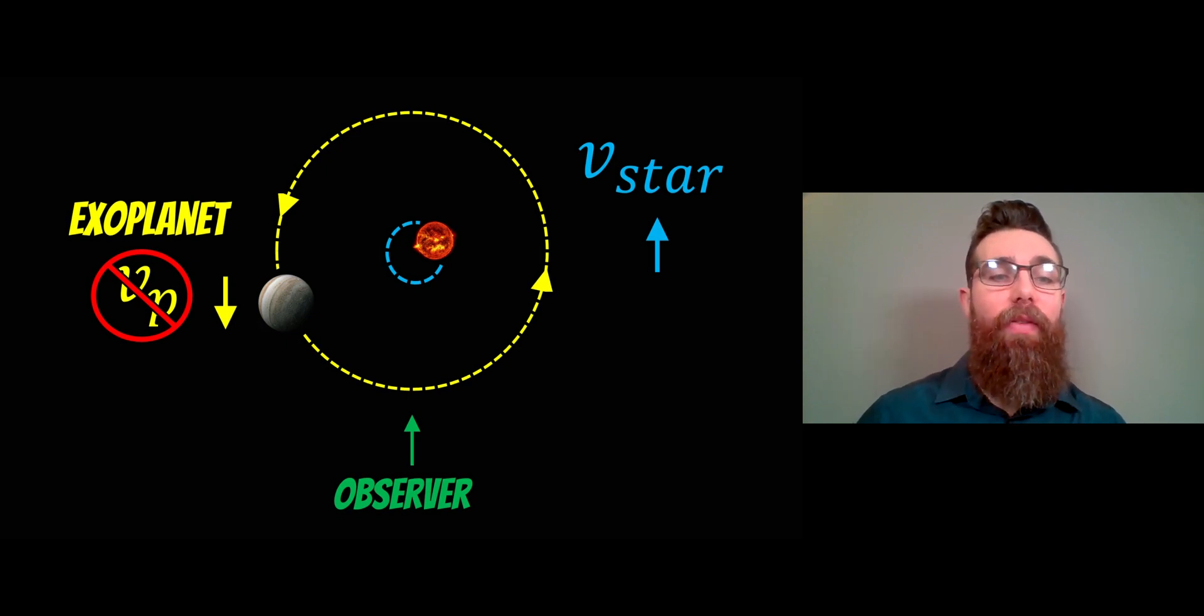Here you have an exoplanet and a star, and they're orbiting a common center of mass. But because the star is so much larger than the exoplanet, the orbit of the star is a lot smaller. Now we can't actually measure the radial velocity of the exoplanet, but we can measure the radial velocity of the star.